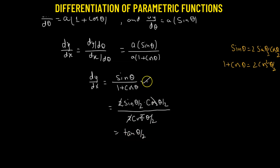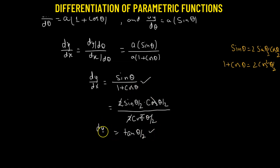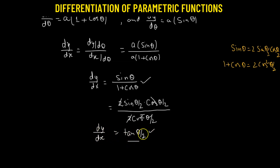So both forms — sine theta over 1 plus cosine theta, or equivalently tangent of theta over 2 — represent the derivative of y with respect to x. Clearly, we obtain our derivative in terms of the parameter theta.